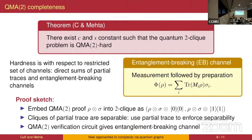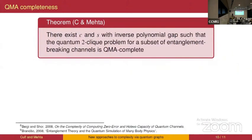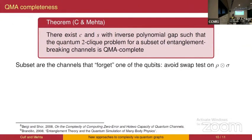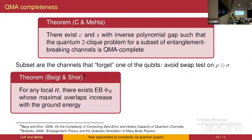A restricted version of this problem also gives a QMA-complete problem. The restriction is to consider only entanglement breaking channels — specifically a large subset of those that forget one of the qubits, in order to avoid having to check orthogonality, which would require a strong test.